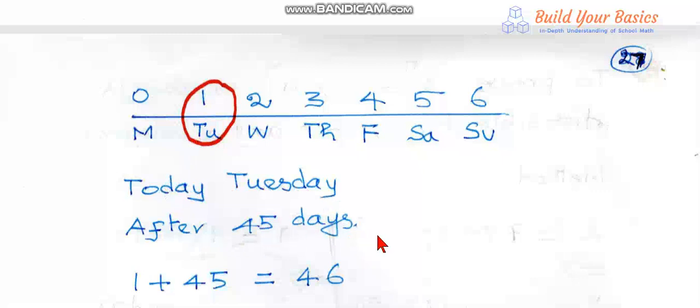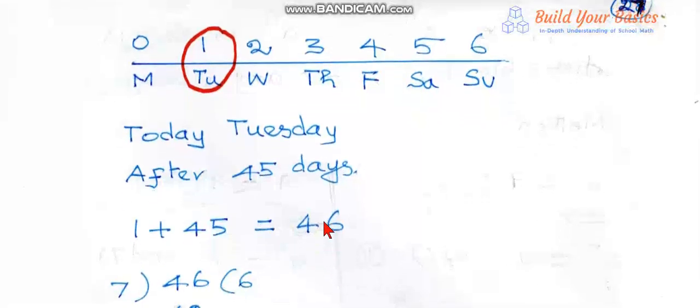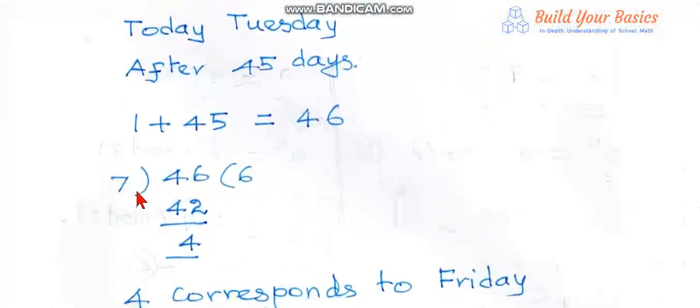After 45 days, so 1 plus 45, that is 46. Divide 46 by 7. The remainder is 4.